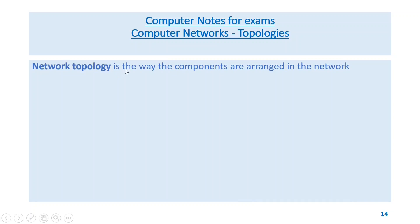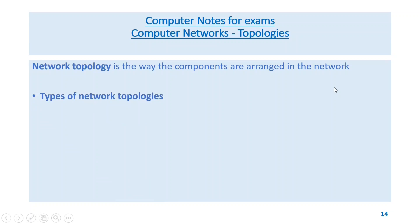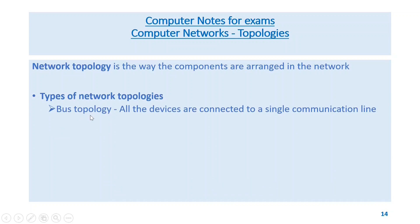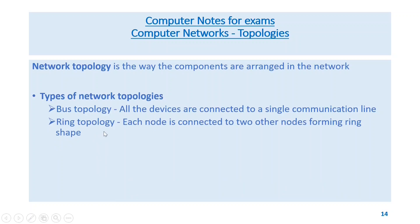Network topology is the way the components are arranged in the network. Types: bus topology — all devices are connected to a single communication line. Ring topology — each node is connected to two other nodes forming a ring shape.